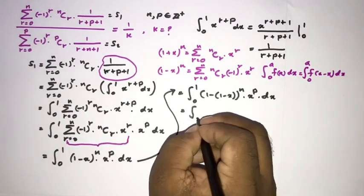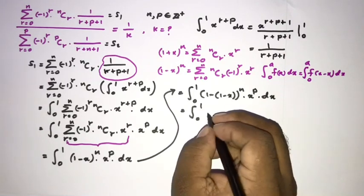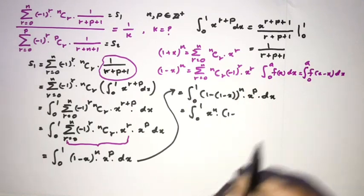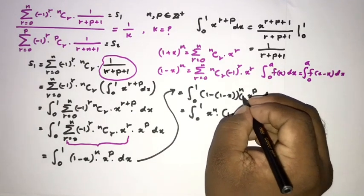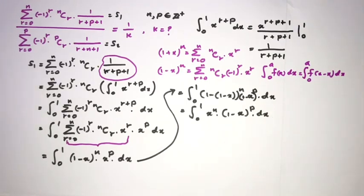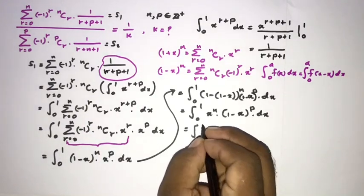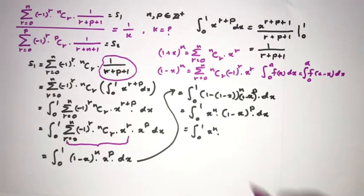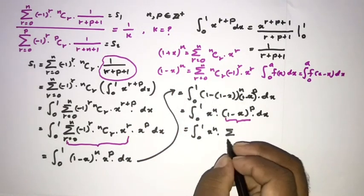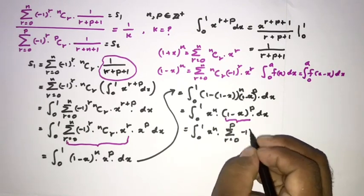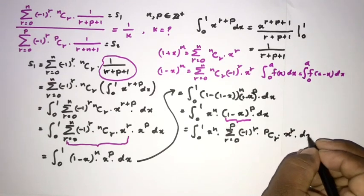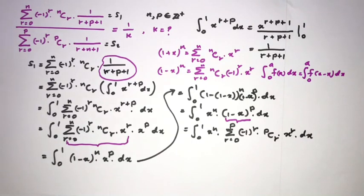After applying King's property and simplifying, we get the integral from 0 to 1 of x to the n times 1 minus x to the p dx. We then expand 1 minus x to the p using the binomial expansion, writing it as the sum from r equals 0 to p of minus 1 to the r times p choose r times x to the r.